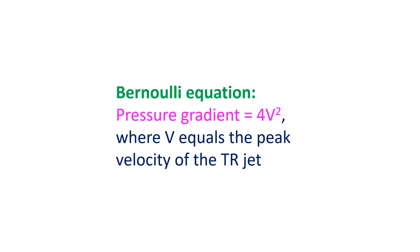Peak gradient of the TR jet is measured and the pressure gradient calculated using the modified Bernoulli equation. Pressure gradient equals 4V squared, where V equals the peak velocity of the TR jet.